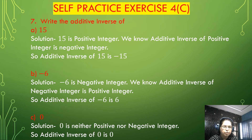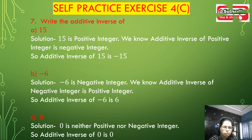Now solve question number 7. Question number 7 is: write the additive inverse. (a) 15 is a positive integer, so the additive inverse of 15 is minus 15. (b) Minus 6 is a negative integer, so the additive inverse of minus 6 is 6. (c) 0 is neither positive nor negative, so the additive inverse of 0 is 0.